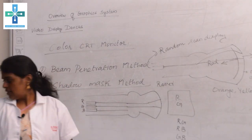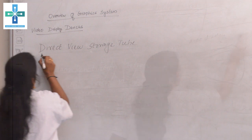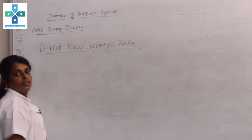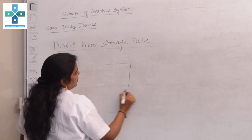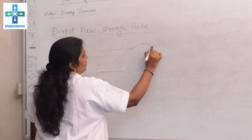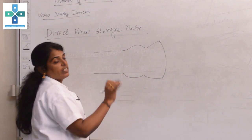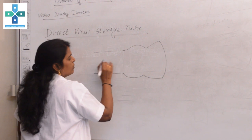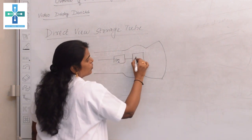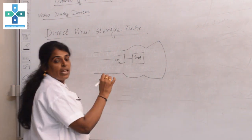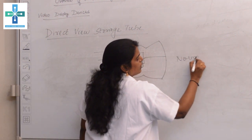Now we are going to see the next topic: direct view storage tubes. In direct view storage tubes, the picture definition is stored as charges. In normal CRTs, each time a picture is to appear on screen, it has to traverse through the picture definition, then go to the frame buffer, and then to the phosphor screen.